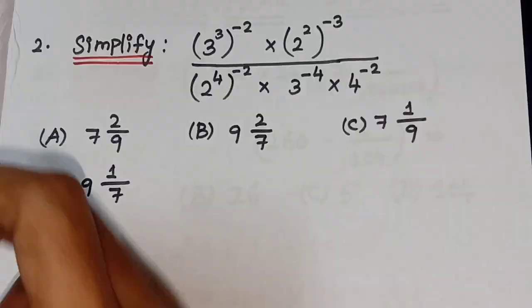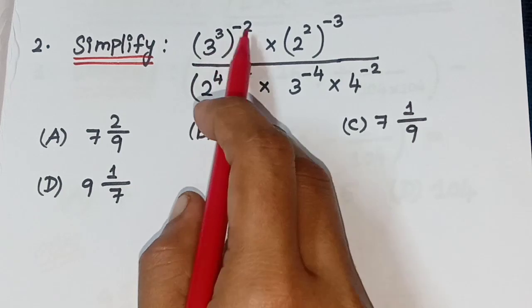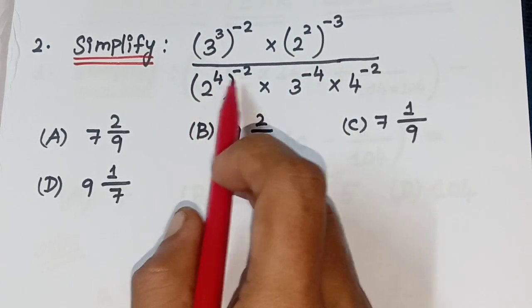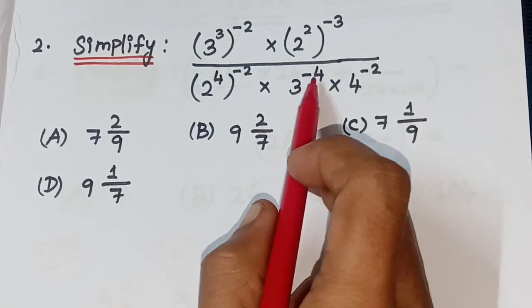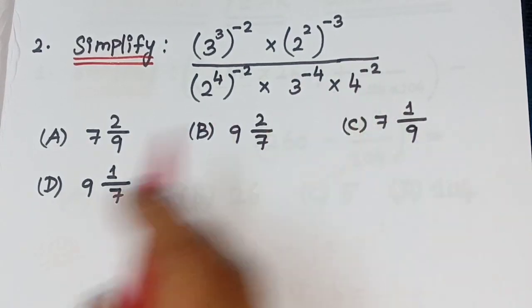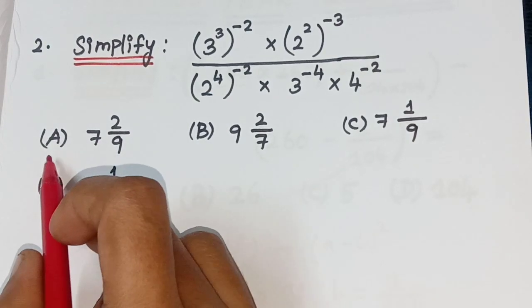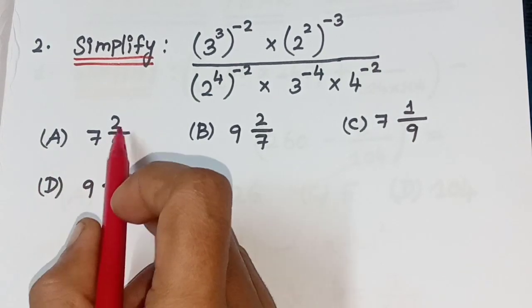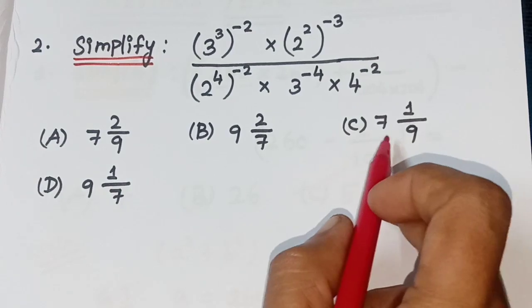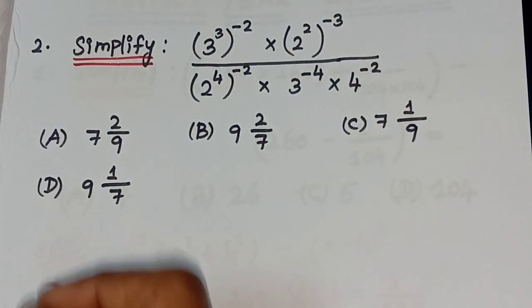Second question: Simplify (3³)^(−2) × (2²)^(−3) divided by (2⁴)^(−2) × 3^(−4) × 4^(−2). Options: A) 7 2/9, B) 9 2/7, C) 7 1/9, D) 9 1/7.